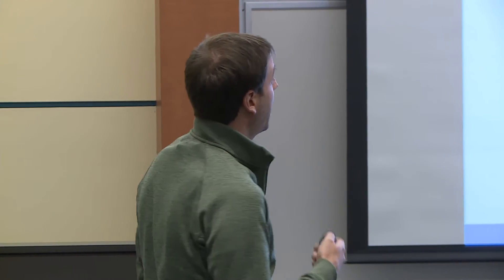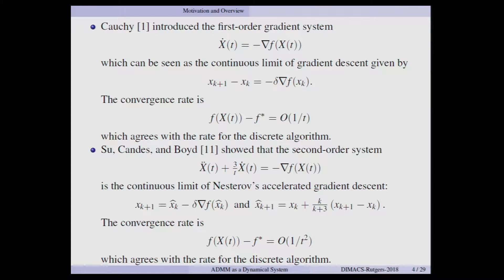Let me start with some work you'll be familiar with, but not in the context we normally think of for ADMM — just unconstrained minimization. A long time ago, even Cauchy recognized that you could think of this dynamical system as a continuous formulation of what we think of as steepest descent, where x_k represents the k-th iterate and delta is your step size. It's known that if you look at the objective function f, it has this 1/t type of convergence rate, which agrees with steepest descent for the discrete algorithm at 1/k.